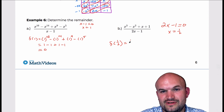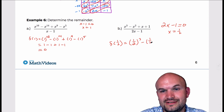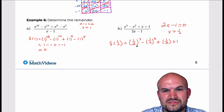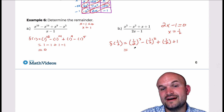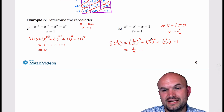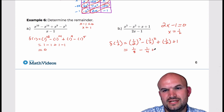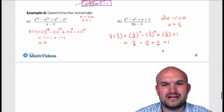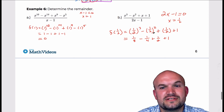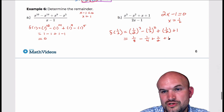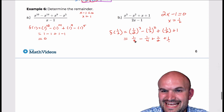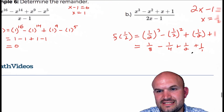You might look at this and say, well, I don't even want to do fractions by evaluating. I kind of get your point, but I think this is going to be a little bit easier than having to do synthetic division. So 1 half cubed is 1 half times 1 half times 1 half, which is 1 eighth. Minus 1 half squared, which is 1 fourth. Plus 1 half, plus 1. Now, we can only combine fractions when they have common denominators. So the common denominator of 8, 4, 2, and 1 is 8. I'm going to rewrite all of these with a denominator of 8.